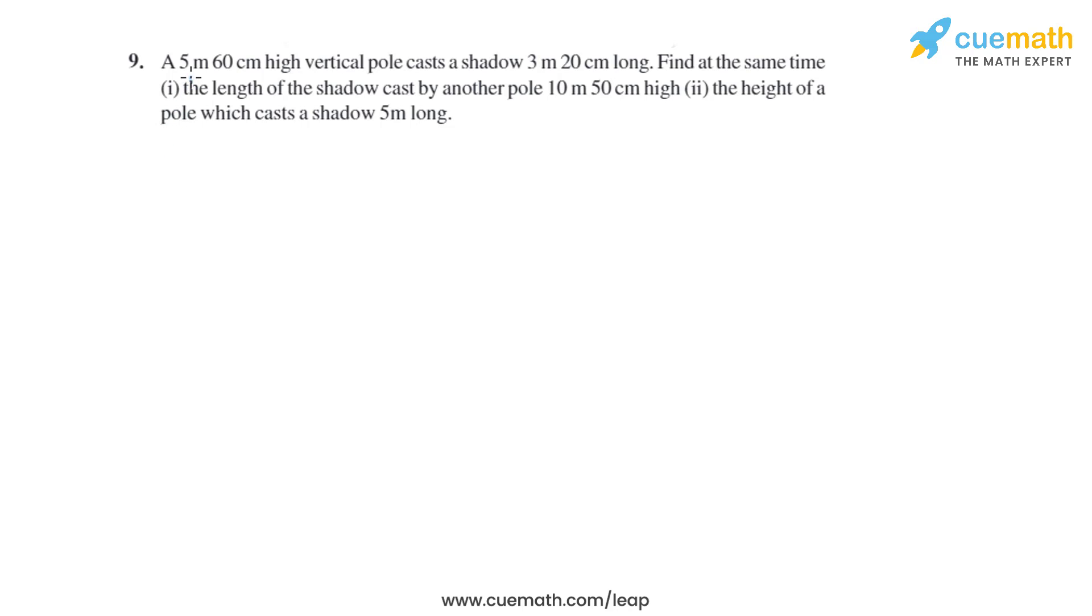Question 9 of this exercise says a 5 meter 60 centimeter high vertical pole casts a shadow 3 meter 20 centimeter long. Find at the same time the length of the shadow cast by another pole 10 meter 50 centimeter high, and the height of a pole which casts a shadow 5 meter long.